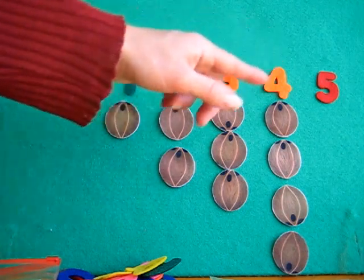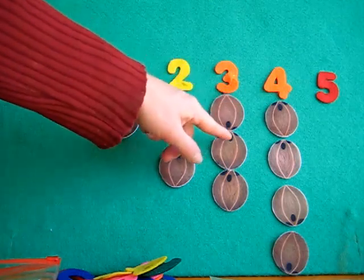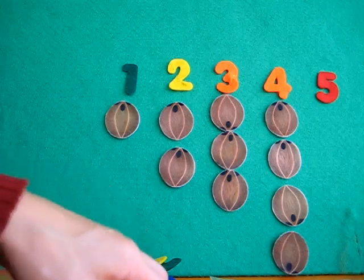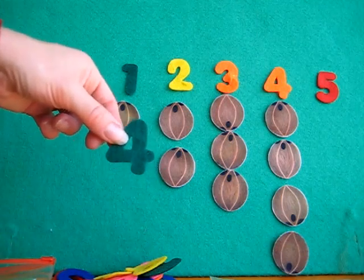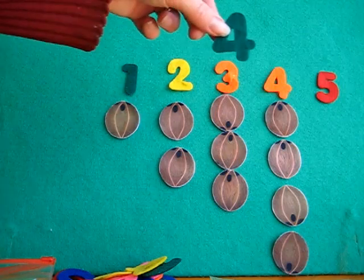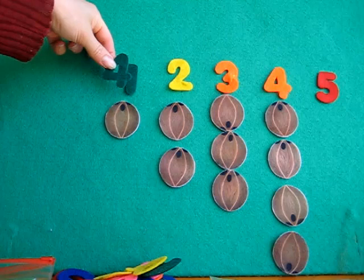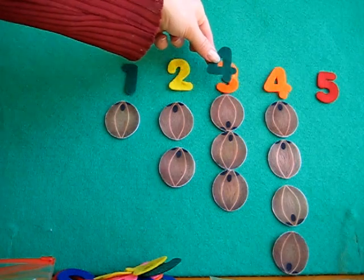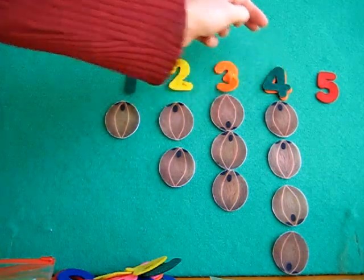So you can do it with coconuts or you can have each number be a different object for fun. Something else that I do to reinforce the numbers is I give her another number. It's like, can you find the number four? Can you put it on top? So she gets, is it here? No. Is this the same? Ooh, this is a match. So we'll put the four on top.